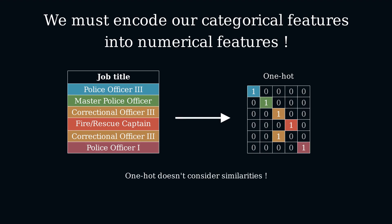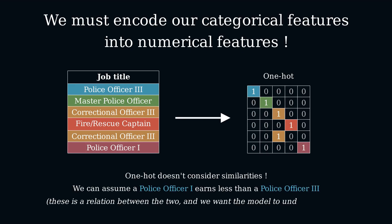The issue is that, in reality, these similarities often have meaning. In this case, if we see the number as a rank, then police officer 1 is likely to earn less than police officer 3.